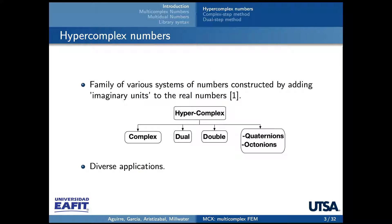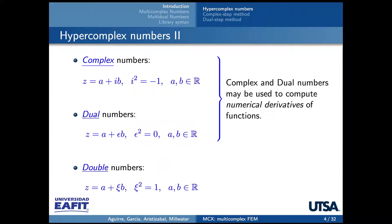Hypercomplex numbers are a family of various systems of numbers constructed by adding imaginary units to the real numbers. You can find complex, dual, double, quaternions and octonions as part of this family of hypercomplex numbers, and they have diverse applications.